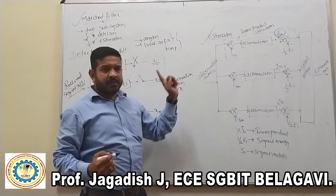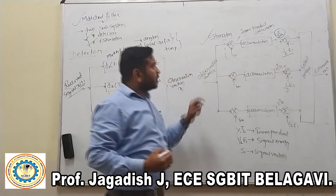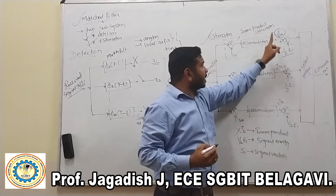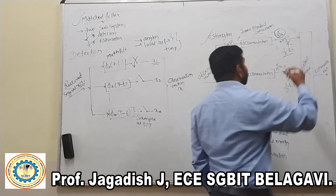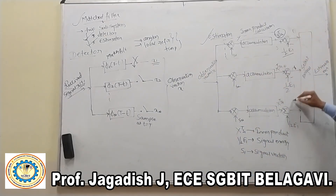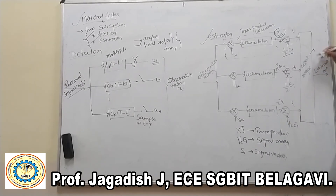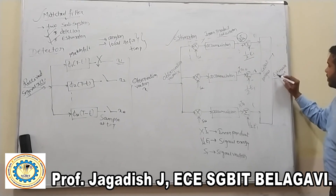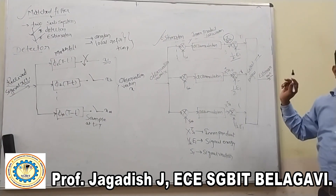That inner product should be summed with the signal energy — that is, 1/2 · E1. Once we get this result, we obtain the symbols 1 and 0. These symbols are applied to the 'select largest' block. Depending on which energy is greater, we estimate the original information.